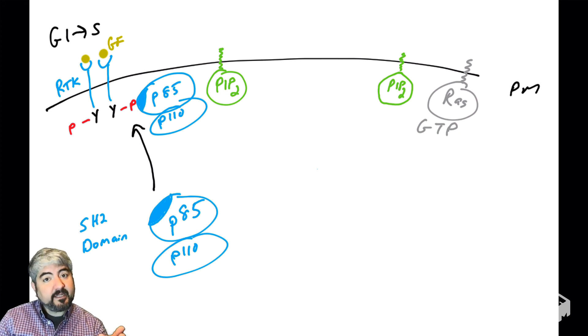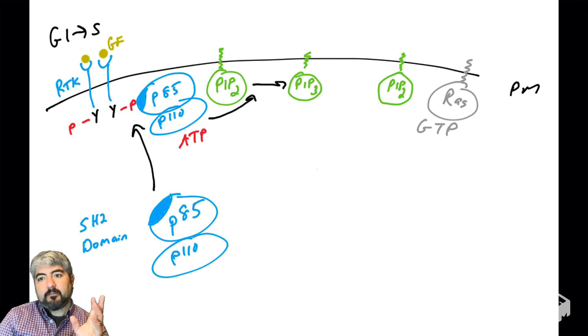PI3 kinase can either bind directly to phosphorylated tyrosines on the cytoplasmic tails of many receptor tyrosine kinases, or they bind an adapter protein that binds those phosphorylated tyrosines. Either way, what do we have here? Now we have PI3 kinase right next to the plasma membrane, right next to its substrate. Now that it is near its substrate, it will bind ATP, grab that terminal phosphate off, and attach it to PIP2, making PIP3. So receptor tyrosine kinases can activate PI3 kinase and thus generate PIP3 in a cell.